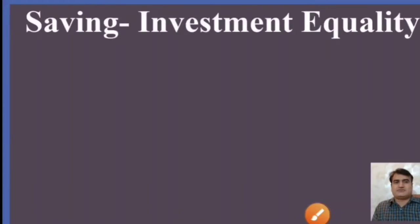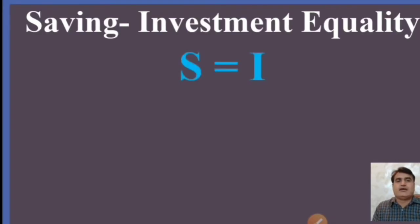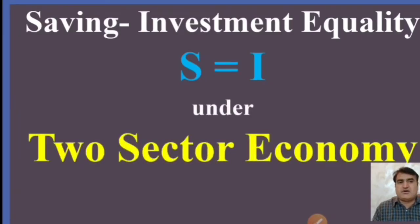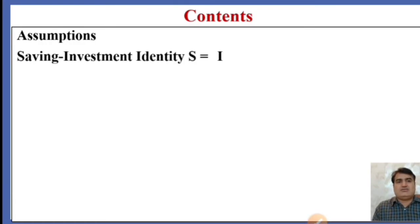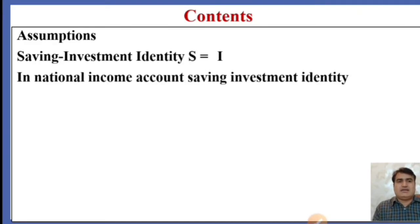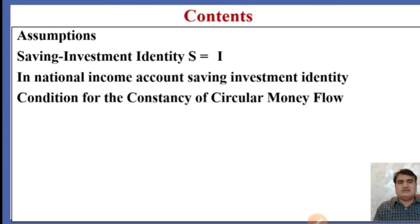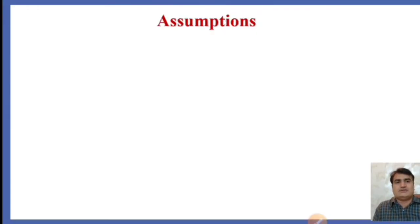Welcome to Easy Learning Economics. I am Dr. Kaval. Today we are going to learn about saving-investment equality, in which we learn how saving and investment are equal under a two-sector economy or closed economy. Our lecture plan covers the assumptions on the basis of which savings and investments are equal, how they are equal, how they are shown in national income accounts, and the conditions for the constancy of circular money flow under two-sector economy.